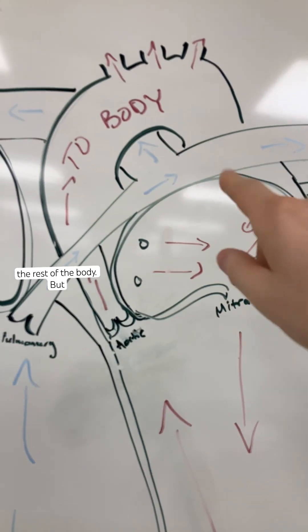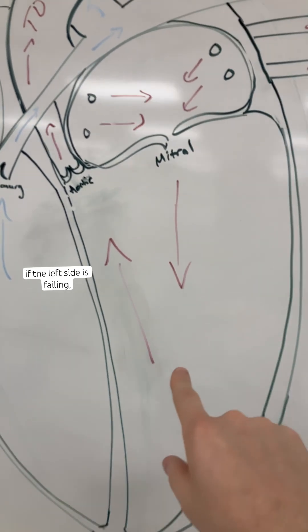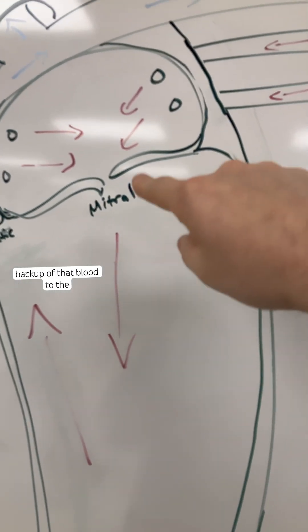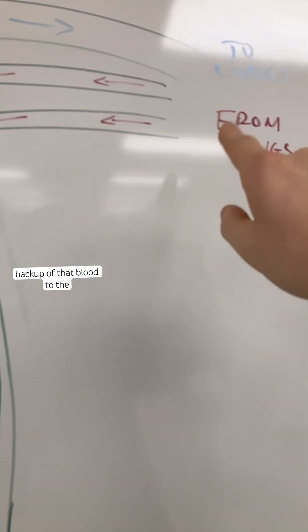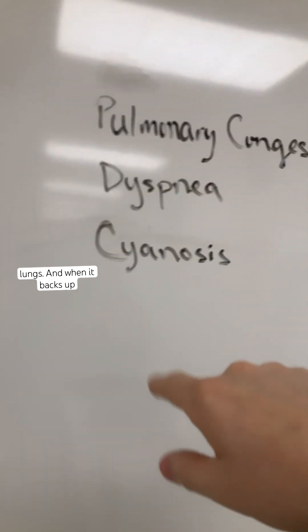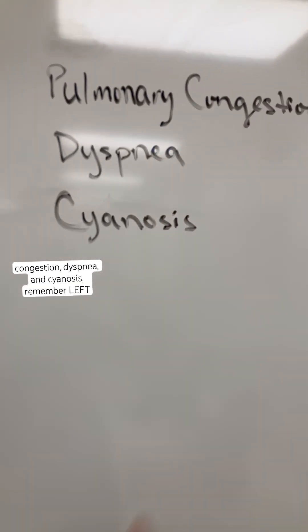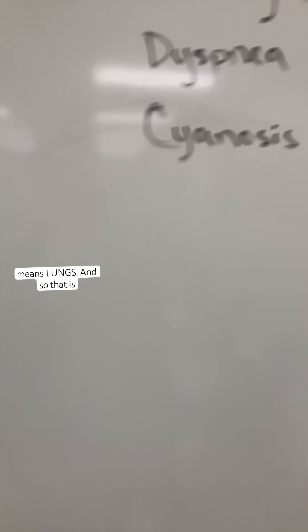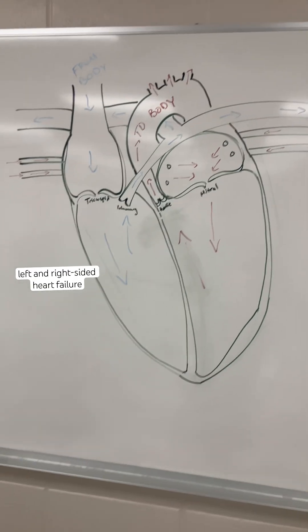But if the left side is failing, then you'll begin to see a backup of that blood to the lungs. And when it backs up to the lungs, you'll see pulmonary congestion, dyspnea, and cyanosis. Remember, left means lungs. And so that is left and right sided heart failure in one minute.